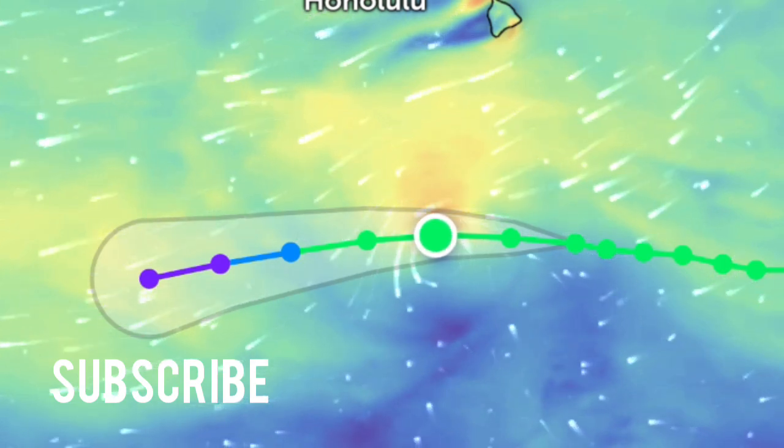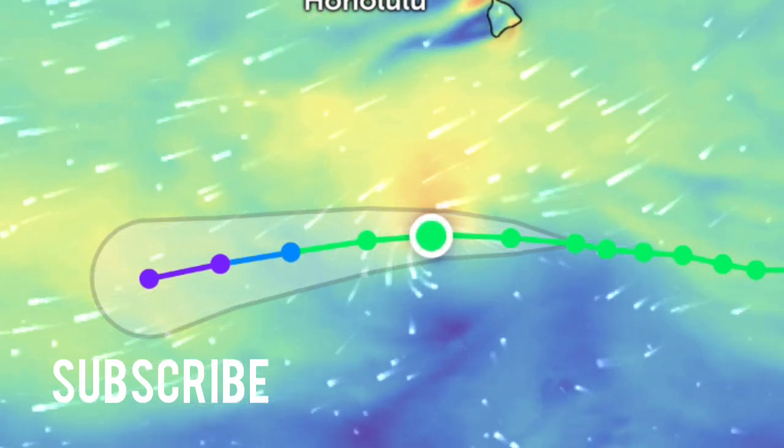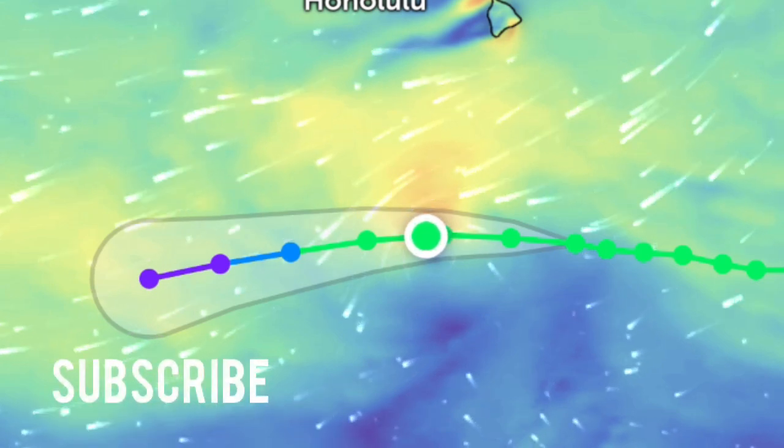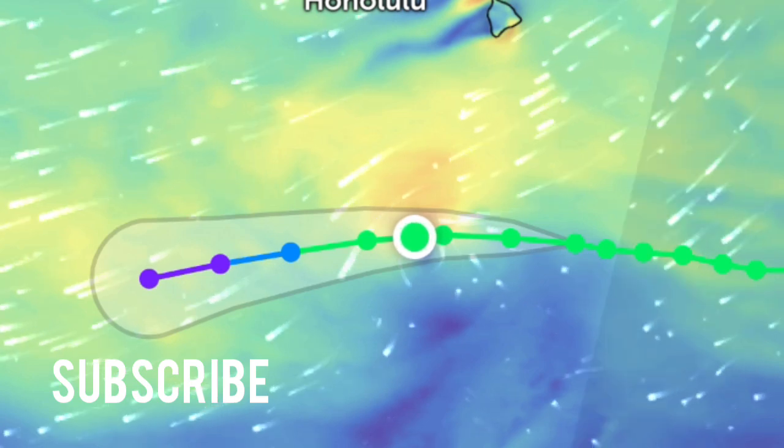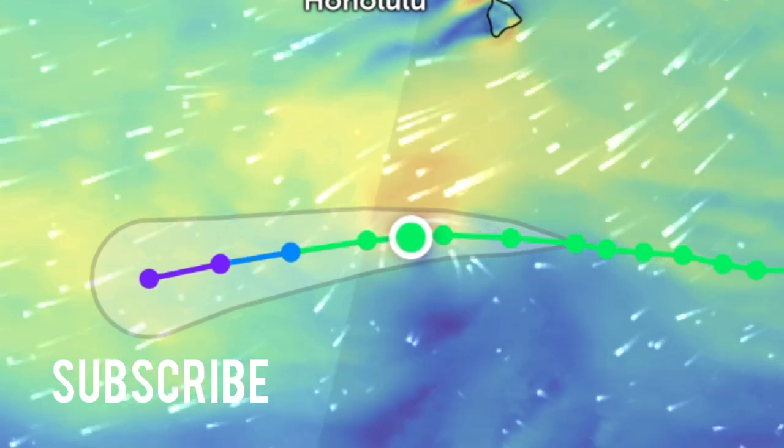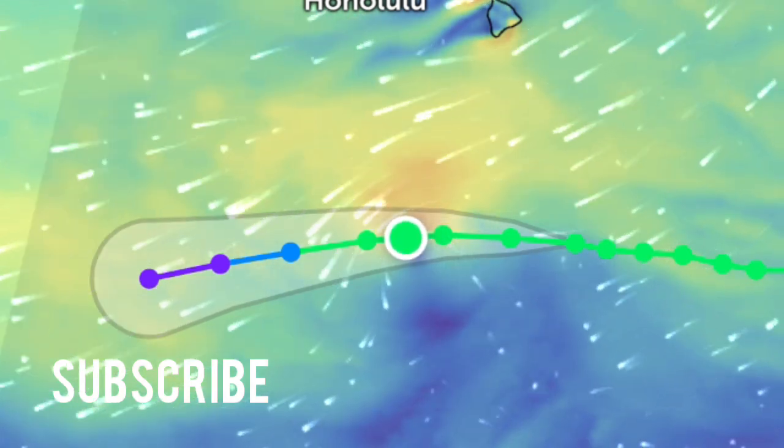A turn toward the west-southwest is forecast on Friday as the weakening tropical cyclone is steered by a deepening ridge to the north. The official forecast track was altered little from the prior advisory and lies near TVCE in the middle of a tightly clustered guidance envelope.